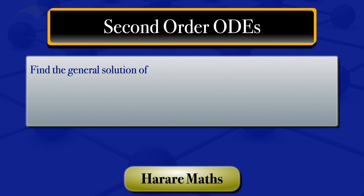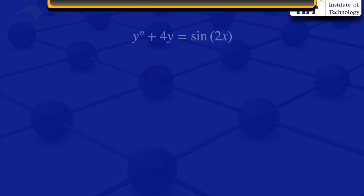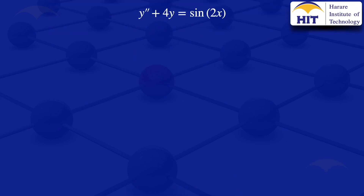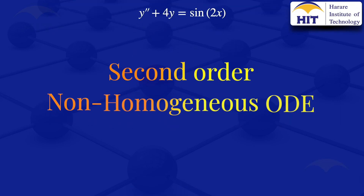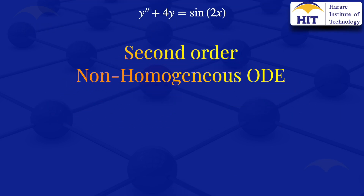In this video I am going to find the general solution of the ODE y prime prime plus 4y equals sine of 2x. We can see that it's a second order non-homogeneous ODE.